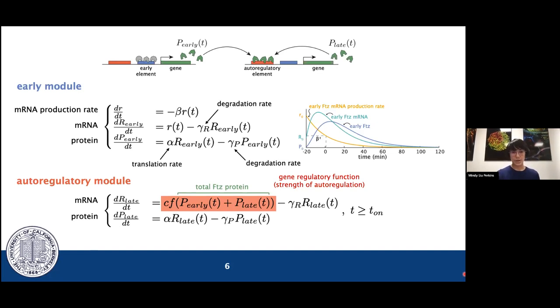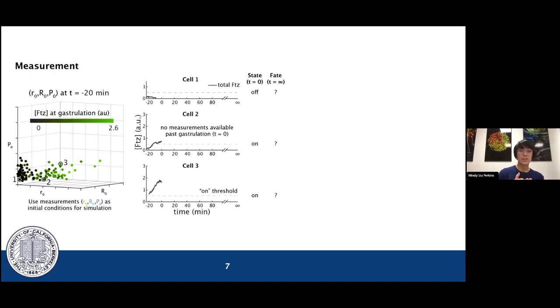Now that we have our model, we want to know whether it's actually a good model. We want to compare it to experimental observations. To do that, we are going to see whether our model can predict whether a nucleus expresses high or low FUTs at gastrulation based on a measurement taken 20 minutes before gastrulation. Specifically, we are going to make a prediction from that 20 minutes to gastrulation and then possibly simulate afterward.